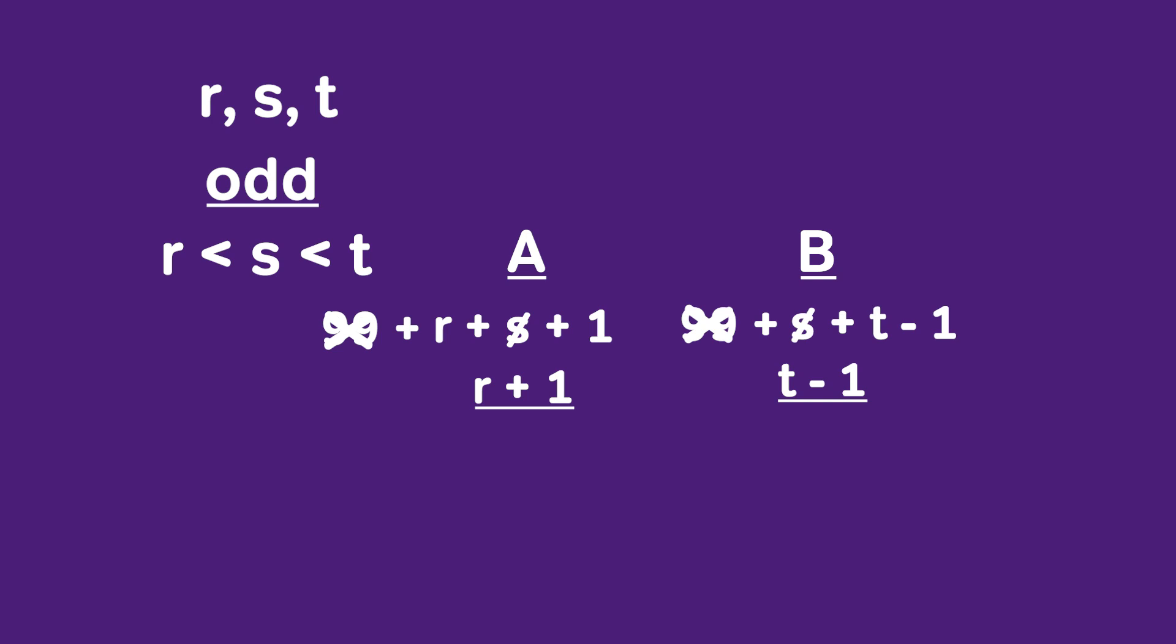So you have a couple of options. One is just to plug in numbers. We can say R is three, three plus one is four. If R is three, these are consecutive. The plug-in numbers, T is seven. Seven minus one is equal to six. B is greater.